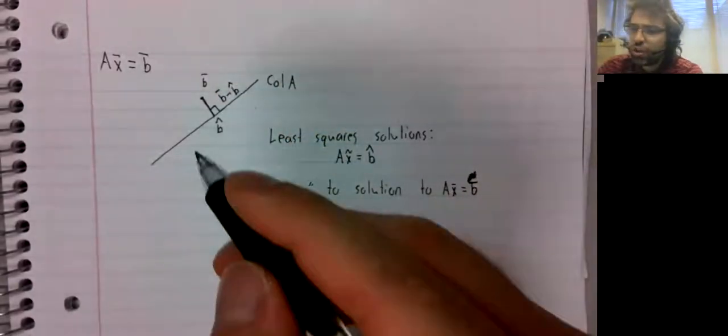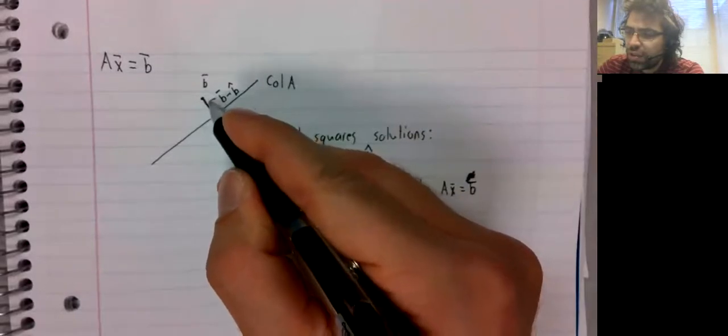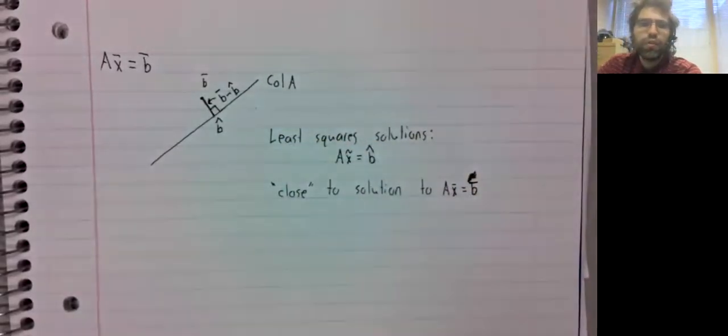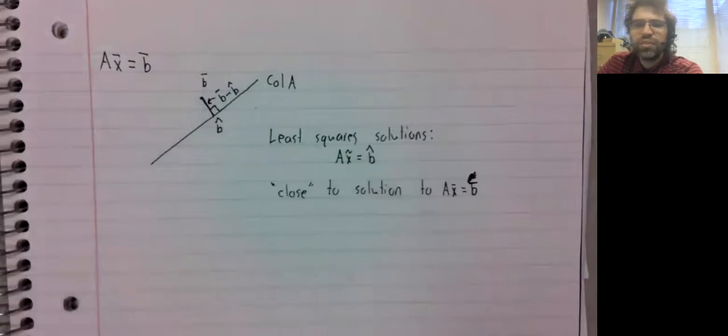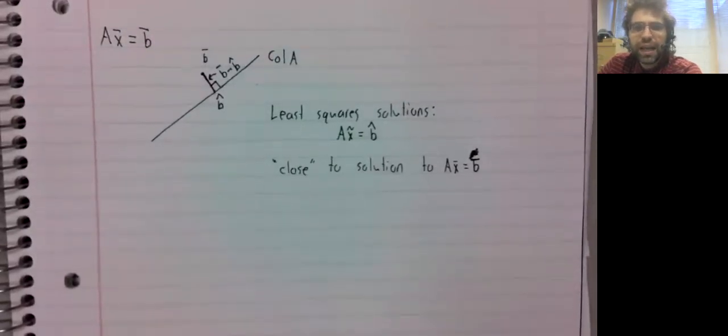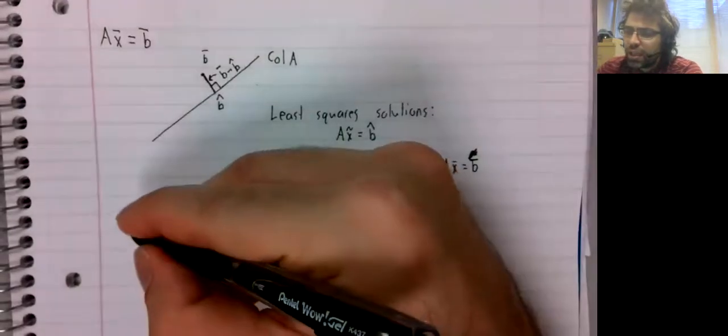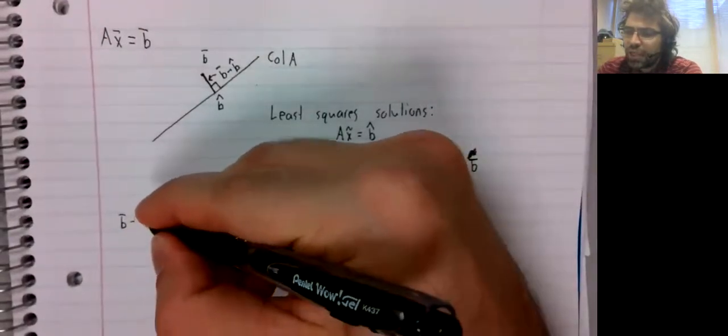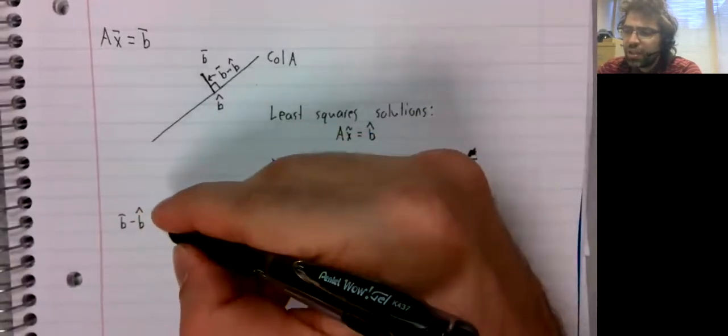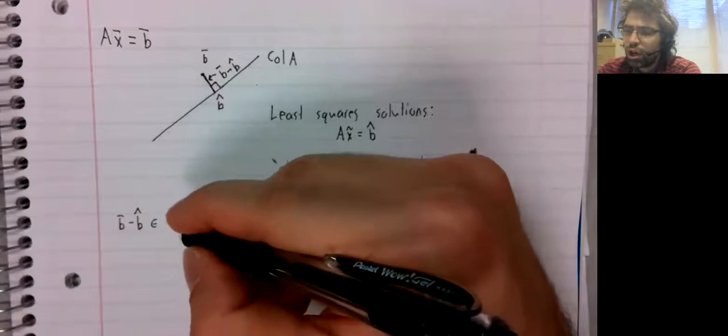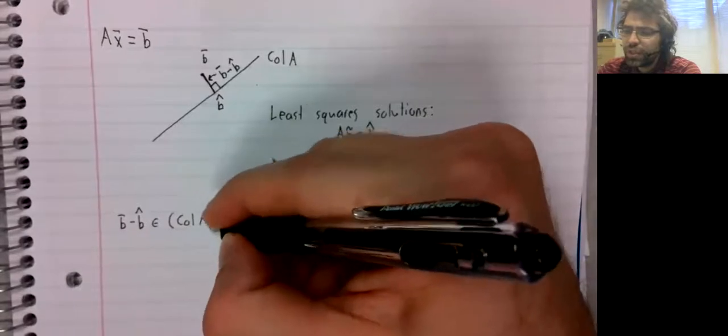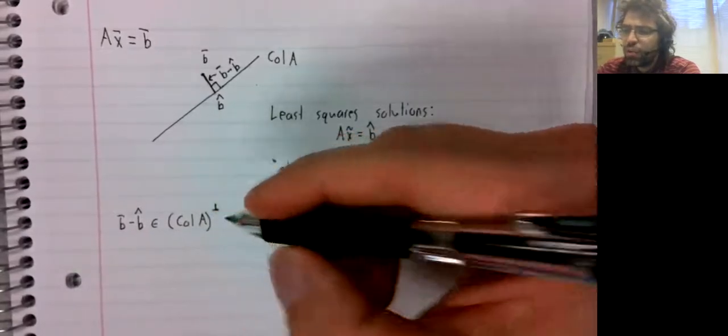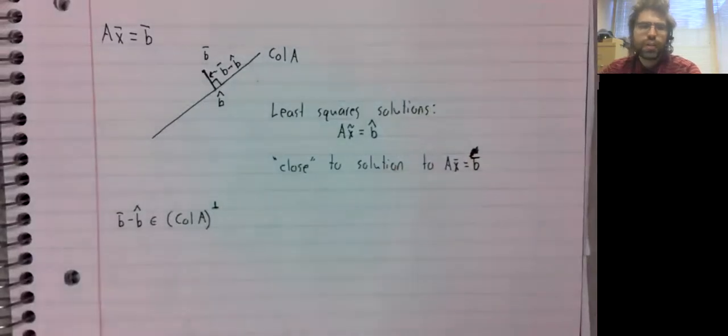So here's an alternative line of thought. This vector is b minus b hat. It is orthogonal to the column space. It is in the orthogonal complement of the column space.